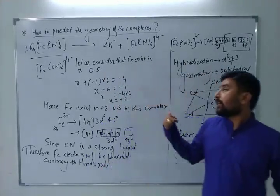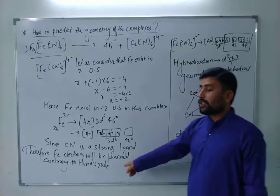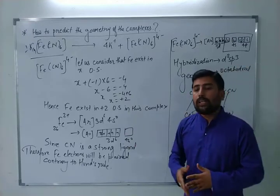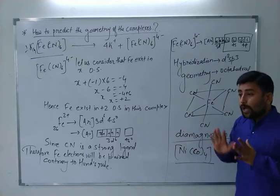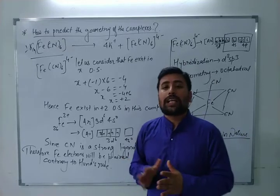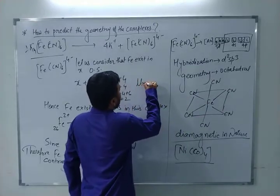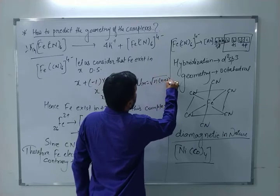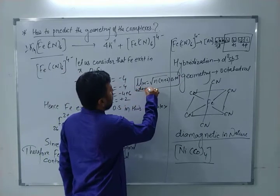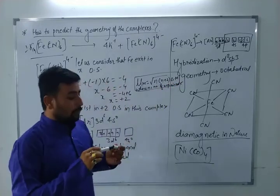Remember: if there is a weak ligand, electrons will not be paired and will follow Hund's rule. But if strong ligands are present, electrons must be paired contrary to Hund's rule, making the complex diamagnetic. When there are unpaired electrons, the complex is paramagnetic. The magnetic moment formula is: μ = √(n(n+2)) BM, where n is the number of unpaired electrons.